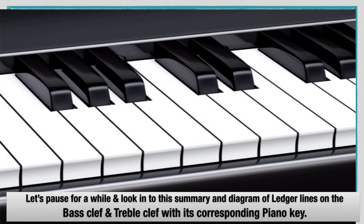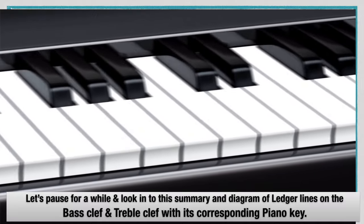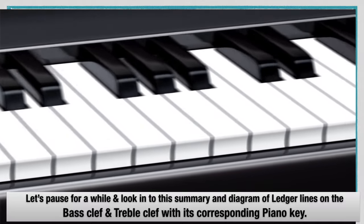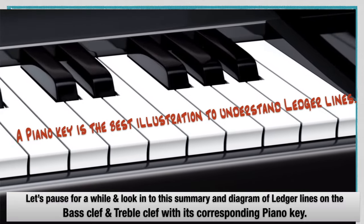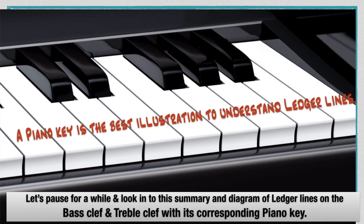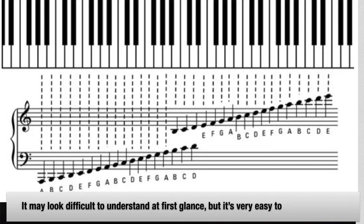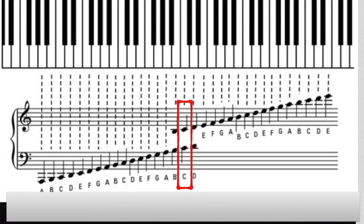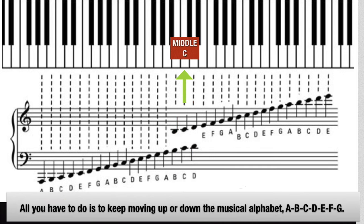Let's pause and look at the summary and diagram of ledger lines on both bass clef and treble clef with their corresponding piano keys. A piano key is the best illustration to understand ledger lines. It may look difficult at first glance, but it's very easy to name the notes. Recognizing the middle C, all you have to do is keep moving up or down the musical alphabet.